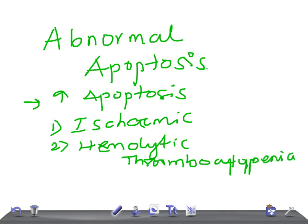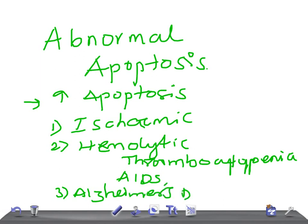Then we have HIV — that's AIDS, acquired immunodeficiency syndrome — and we have Alzheimer's disease. So if there's too much or increased apoptosis, these are the resulting conditions.